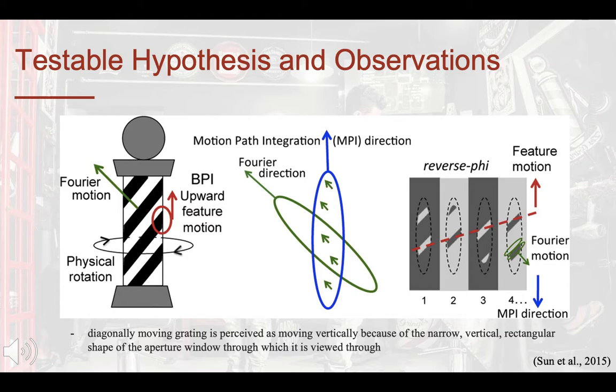Thus, a vertically elongated aperture makes vertical motion dominant, whereas if it was reoriented and horizontally elongated, then the aperture would determine a horizontal motion.